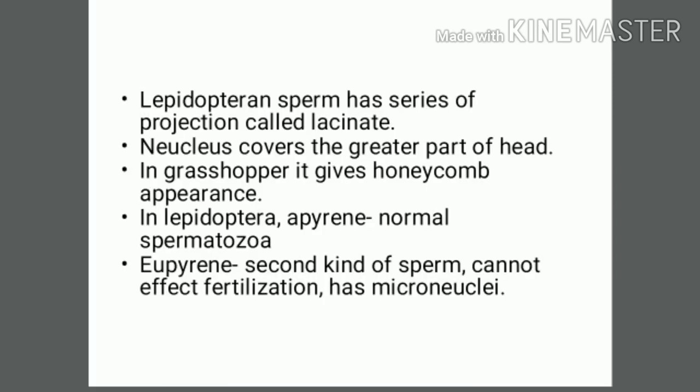Lepidoptera sperm has a series of projections called lacinate. The nucleus covers the greater part of the head; in grasshoppers it gives a honeycomb appearance. In Lepidoptera, there are two kinds of sperm: apyrene and eupyrene. Apyrene is the normal spermatozoa, while eupyrene cannot affect fertilization and has only micronuclei.